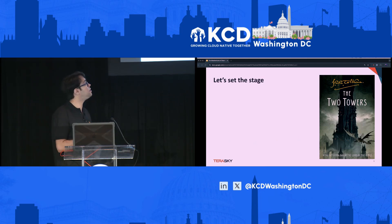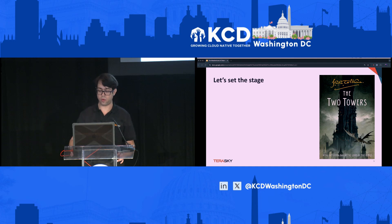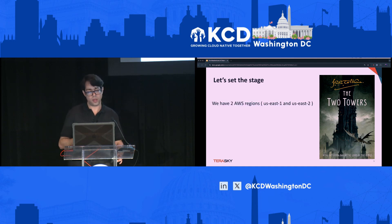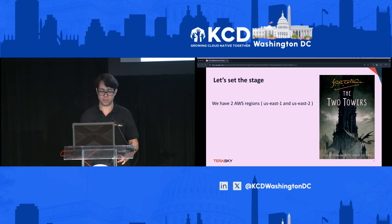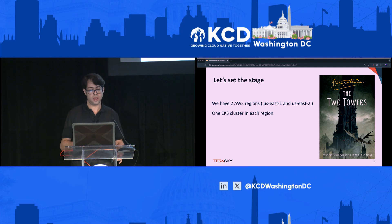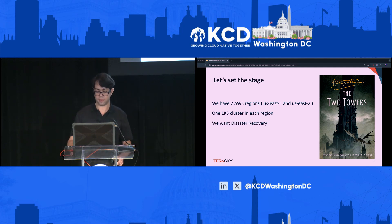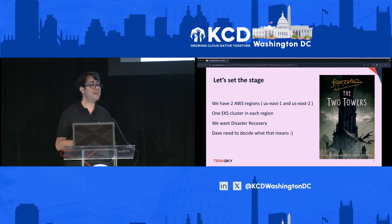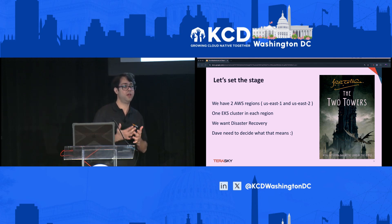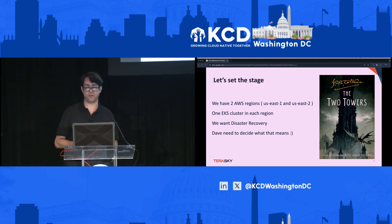Let's set the stage for the story. In Dave's company, we have two AWS regions: US East 1 and US East 2. He's got EKS clusters already provisioned in each of the regions. He wants disaster recovery, but Dave needs to decide by himself what it means for him to do disaster recovery.